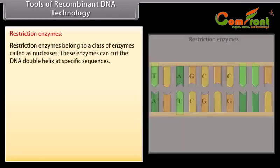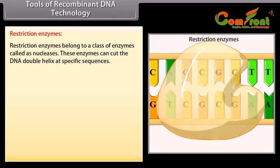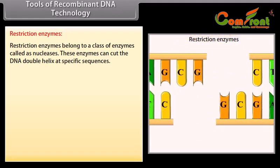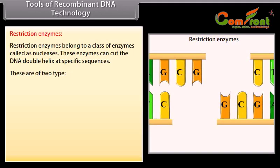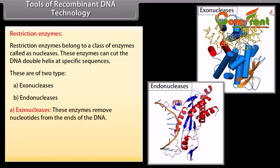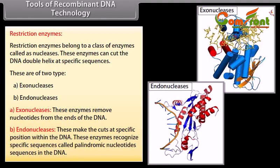Tools of recombinant DNA technology. Restriction enzymes belong to a class of enzymes called nucleases. These enzymes can cut the DNA double helix at specific sequences. They are of two types: exonucleases, which remove nucleotides from the ends of the DNA, and endonucleases, which make cuts at specific positions within the DNA. Endonucleases recognize specific sequences called palindromic nucleotide sequences in the DNA.